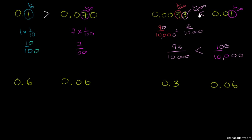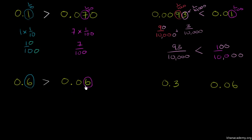So this quantity right over here is less than that quantity there. The less than symbol — the small end points to the smaller number, the larger end to the larger number. That's true of both the less than and greater than symbols. Now let's look at 0.6 versus 0.06. Here I have a 6 in the tenths place, so it literally represents six tenths. And in the second number I have a 6 in the hundredths place. Six hundredths is definitely smaller than six tenths — a hundredth is a tenth of a tenth. So 0.6 is greater than 0.06.